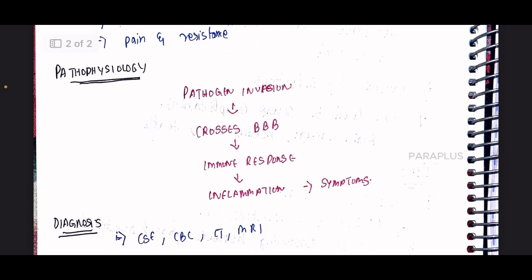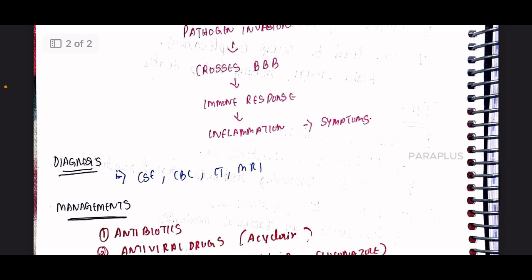Pathophysiology: pathogen etiology, bacteria, fungal, viral cross the blood-brain barrier, triggering immune response and inflammation.